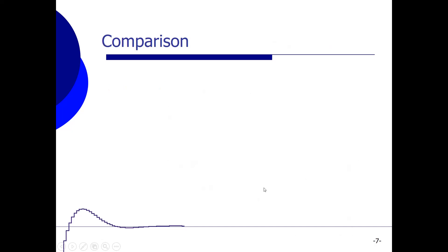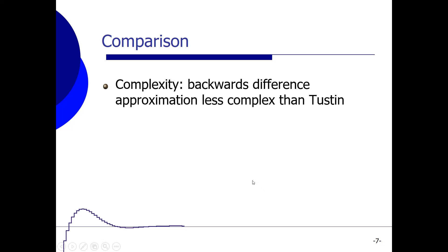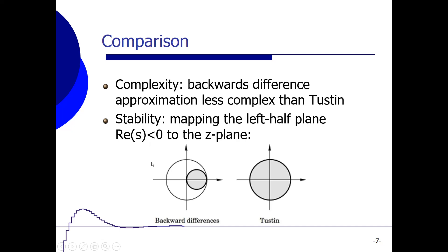Now let's compare both methods. With respect to complexity, the backwards difference approximation is somewhat less complex than Tustin. With respect to accuracy, when transforming the complete left half plane from the S domain to the Z plane, the backwards difference approximation yields a circle within the unity circle in the Z domain — stable, but not using the complete unity circle. The Tustin transformation maps the complete left half plane to the complete unity circle in the Z domain, so Tustin is somewhat more accurate than the backwards difference approximation.